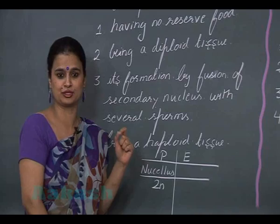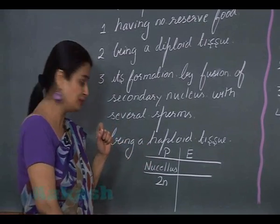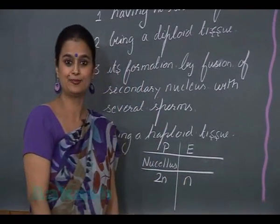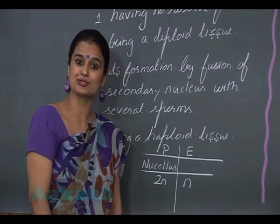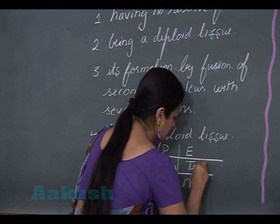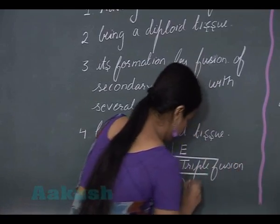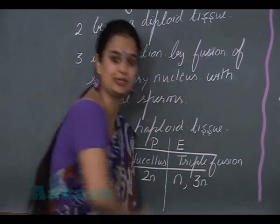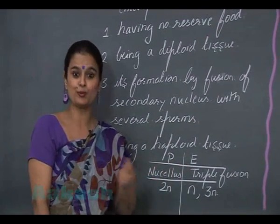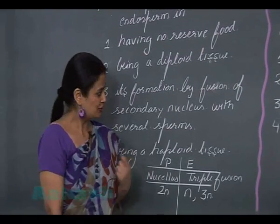In the case of gymnosperms, endosperm is formed without triple fusion and without fertilization, so it is haploid. But in angiosperms, endosperm is formed through triple fusion — three nuclei fuse — so in angiosperms the ploidy of endosperm is 3N.